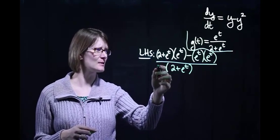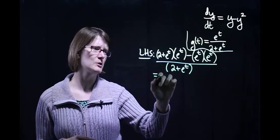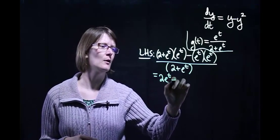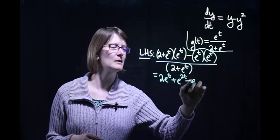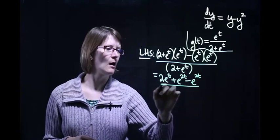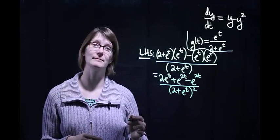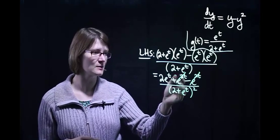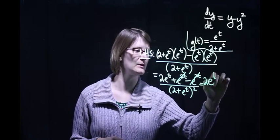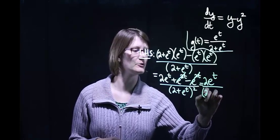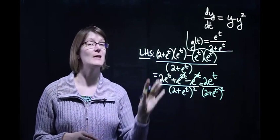All of that is divided by the denominator squared. Simplifying this a little bit, let's multiply out the numerator. We're going to end up with 2e to the t plus e to the 2t, and then minus e to the 2t, all over (2 plus e to the t) squared. The e to the 2t terms cancel, so we end up with 2e to the t all over (2 plus e to the t) squared. That's our left-hand side.